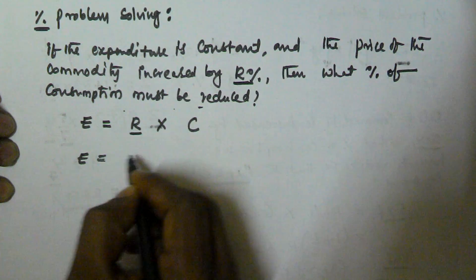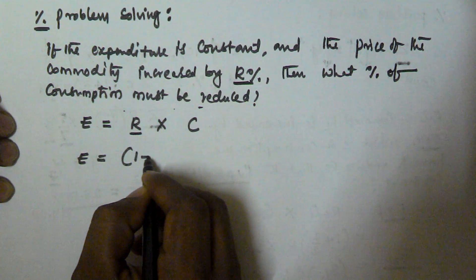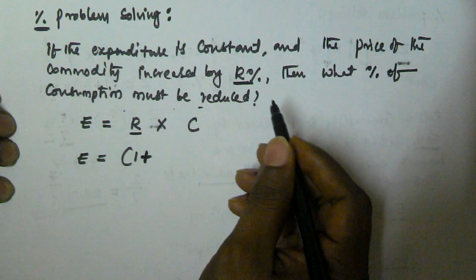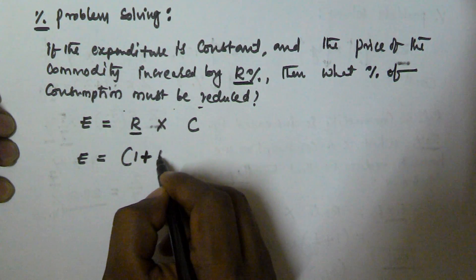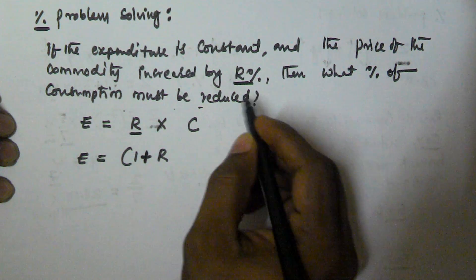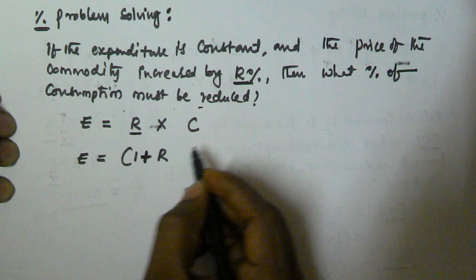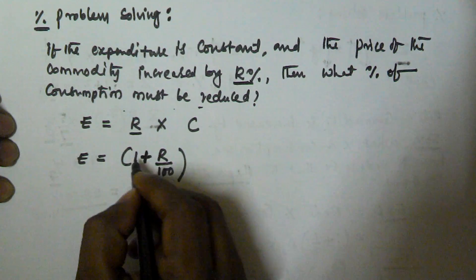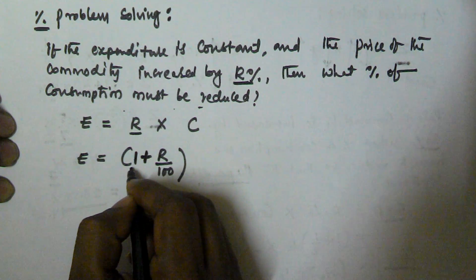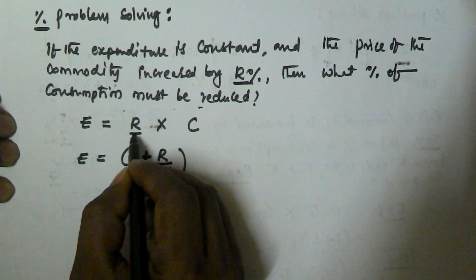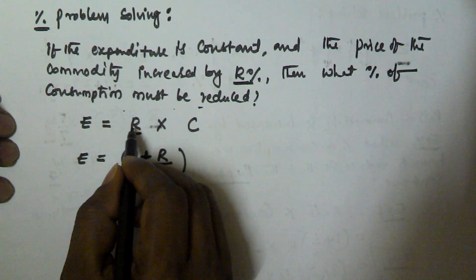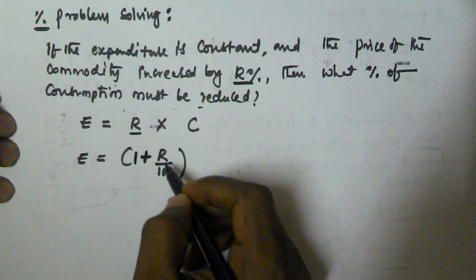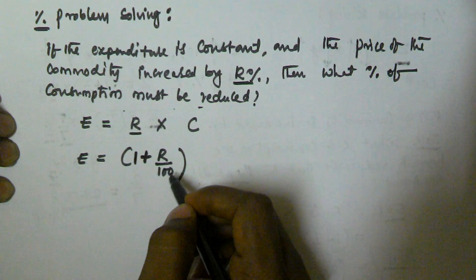So expenditure is equal to 100% rate — the initial rate — and it is increased by R percentage. I am converting that R percentage into the fraction, so that is R by 100. The 1 represents 100% of the initial rate, and it is increased by R percentage, so the equivalent fraction of R percentage is R by 100.